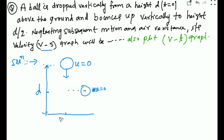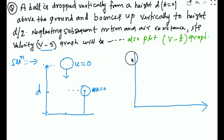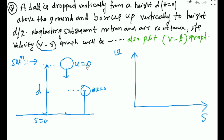After the second rebound, velocity becomes 0 again. To plot the velocity-displacement graph, we put velocity on the y-axis and displacement on the x-axis. We assume the ground is s=0. At the starting point, which we call point d, the initial velocity u is 0.